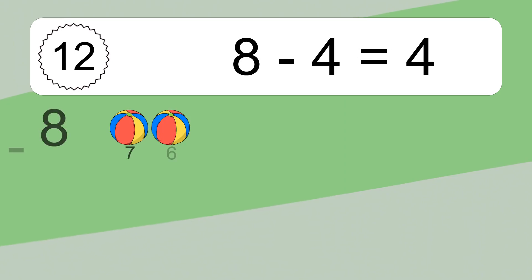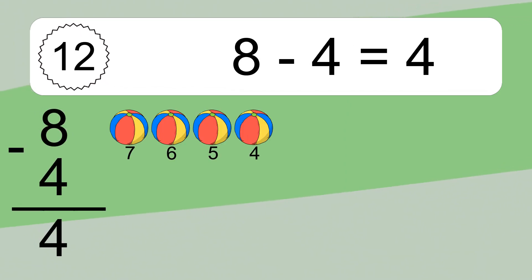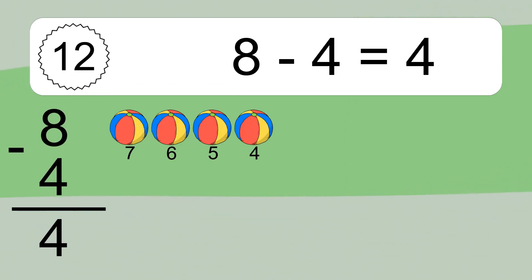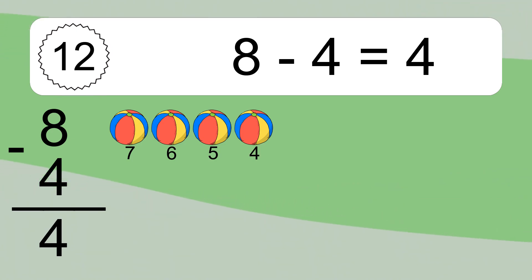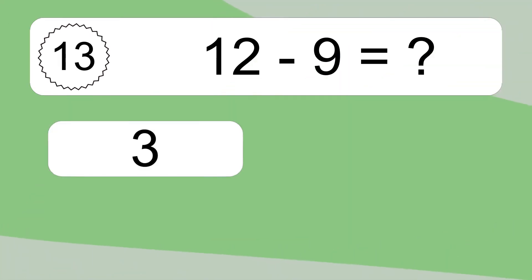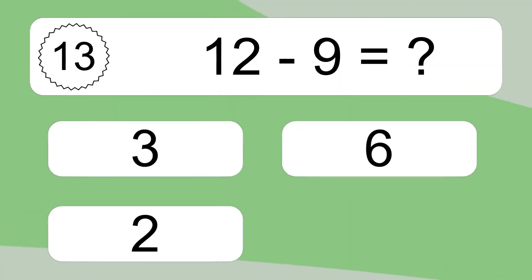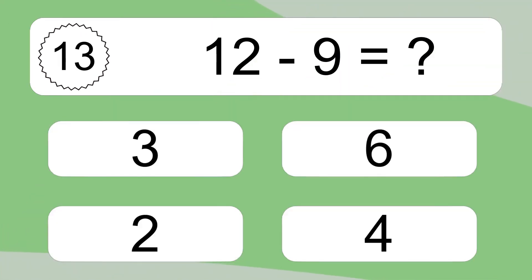8 minus 4 equals 4. Let's count it: 7, 6, 5, 4. 12 minus 9 equals what?